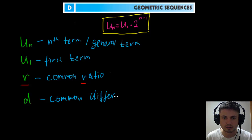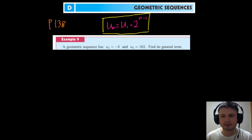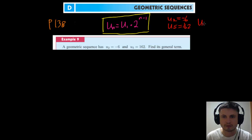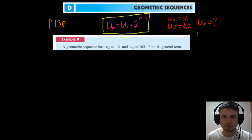For arithmetic sequences, the constant was called the common difference, which is why the letter was d. Let's try one example from the book — example 9 on page 138. A geometric sequence has u2 equal to minus 6 and u5 equal to 162. Find the general term. So, the second term is minus 6, the fifth term is 162, and we need to find un. For this we need to find u1 and the common ratio r, both of which are unknown.